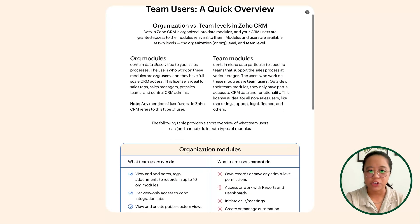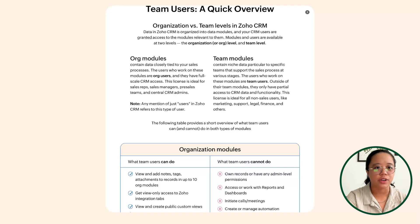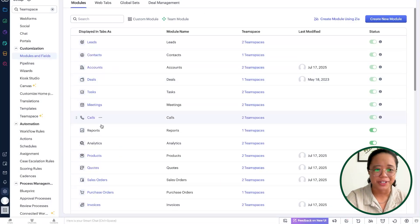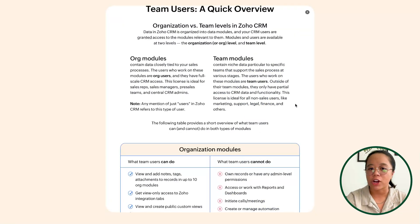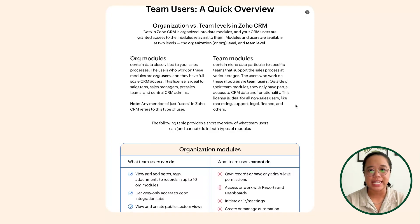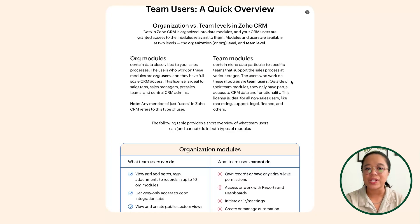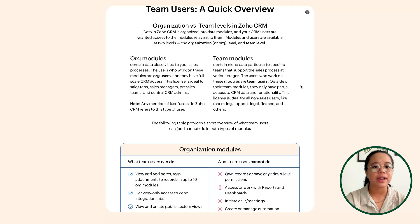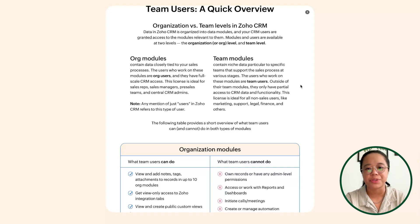Leads, contacts, accounts, deals — everything that exists is an organization module. But if we're looking at team modules, team modules will contain the specific data that you need specific teams to be able to see. The users that work on those particular modules are labeled in Zoho terms as team users. Outside of their team modules, they only have partial access to the CRM, whereas for modules included in their team space, they'll be able to have full functionality within those modules.